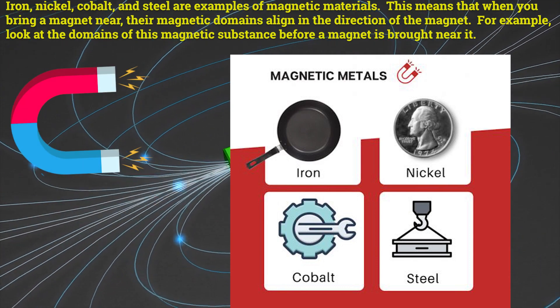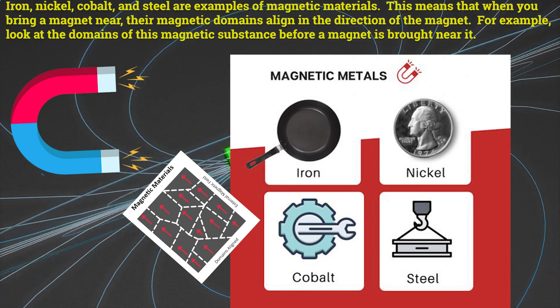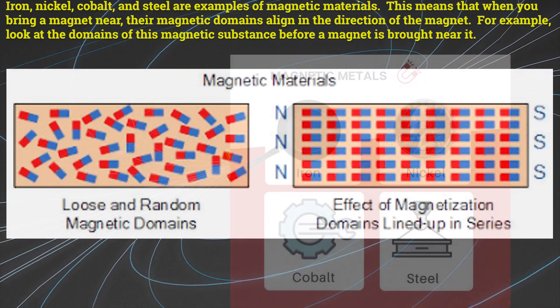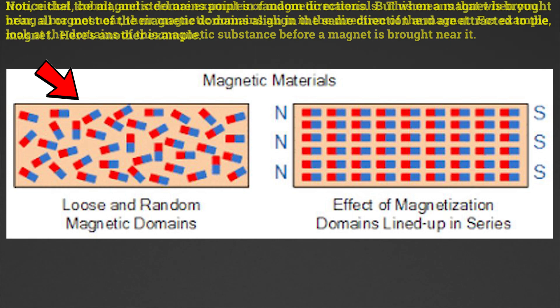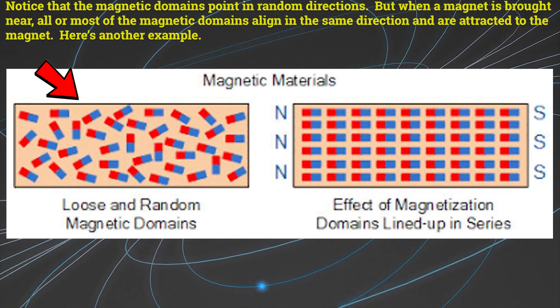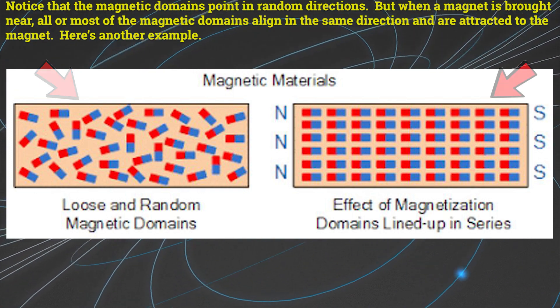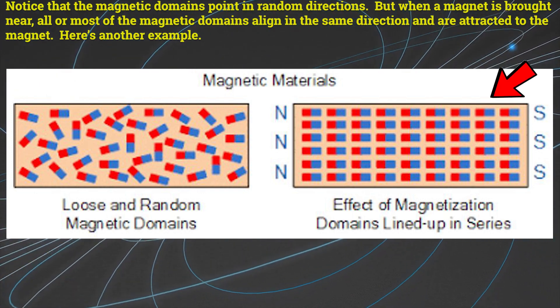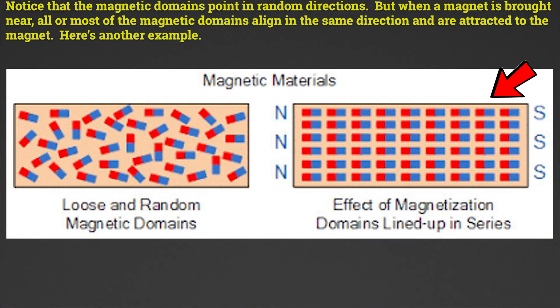This means that when you bring a magnet near, their magnetic domains align in the direction of the magnet. For example, look at the domains of this magnetic substance before a magnet is brought near it. Notice that the magnetic domains point in random directions. But when a magnet is brought near, all or most of the magnetic domains align in the same direction and are attracted to the magnet.